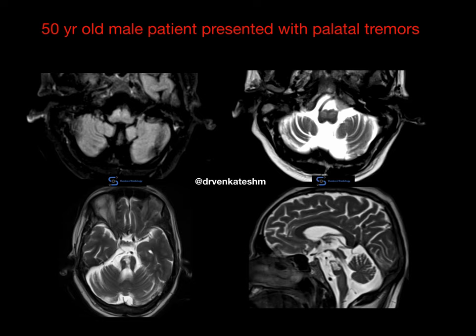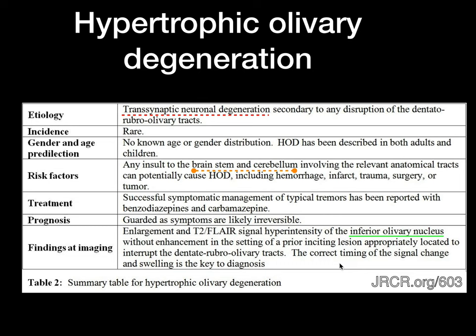At the level of medulla, you can see the hyperintense and swollen inferior olivary nucleus. This is the FLAIR and this is the T2 axial image. At the cranial sections, at the level of the brainstem, you can see the chronic infarct in the pons and caudal section of midbrain. So this is a classic case of hypertrophic olivary degeneration.